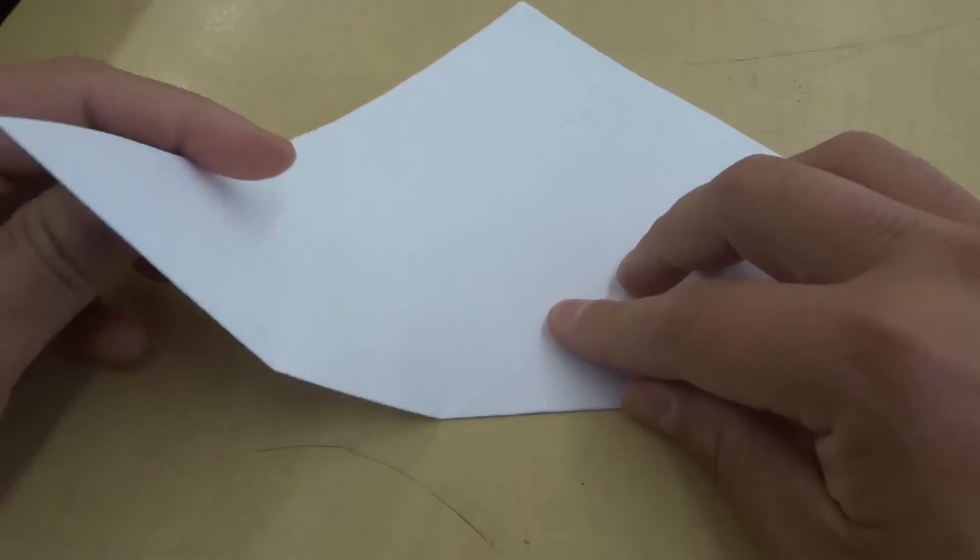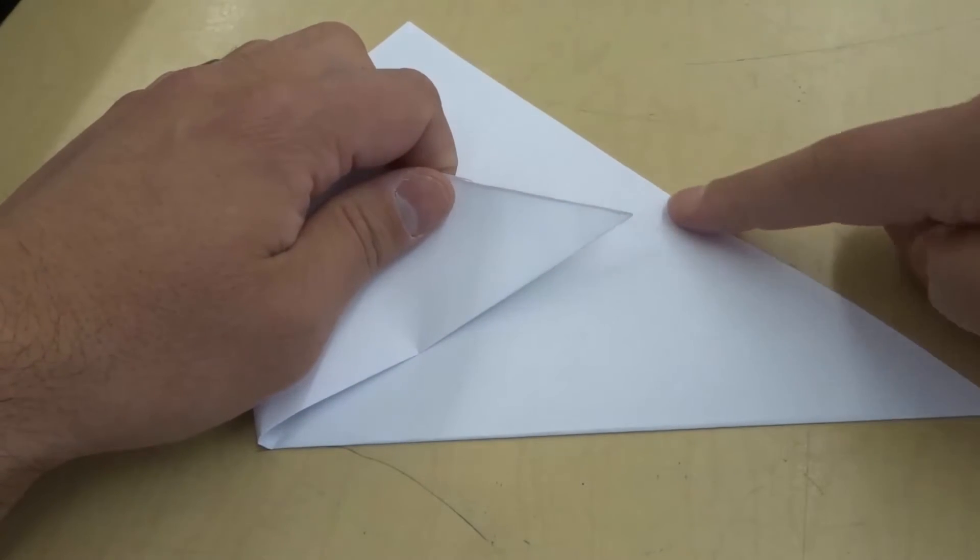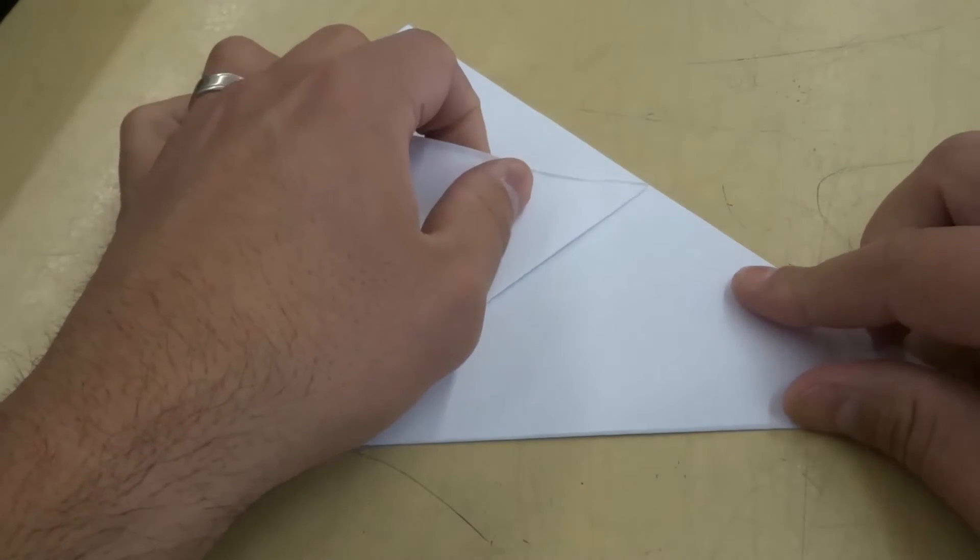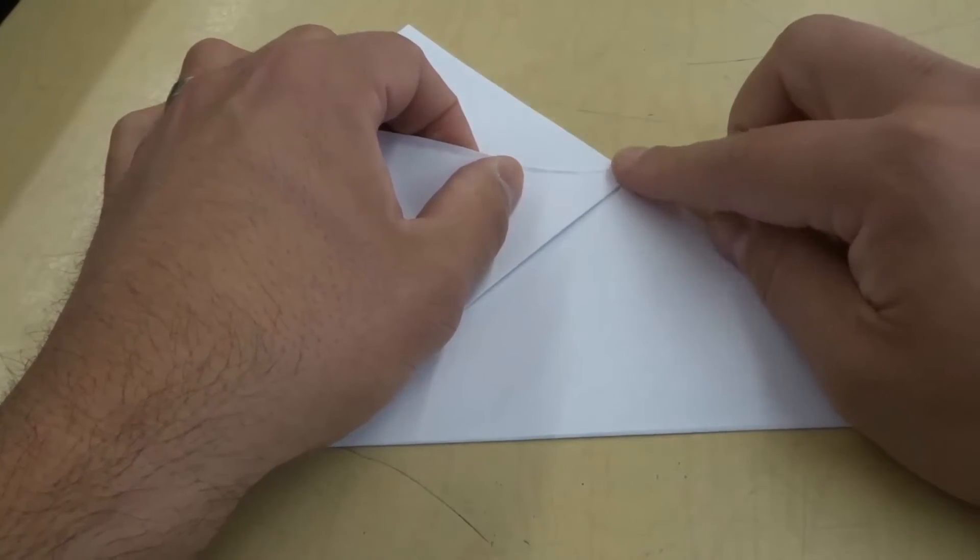Now what I'm gonna do is take my bottom left corner and fold it to meet the middle of this line right over here. Roughly the middle. Doesn't have to be perfect but I'm gonna fold it to meet roughly the middle of this line.